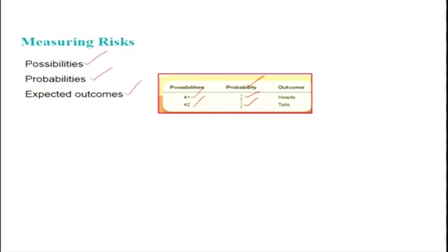Probability is a measure of the likelihood that an event will occur. It is always expressed as a number between 0 and 1. The closer the probability is to 0, the less likely it is that the event will occur.